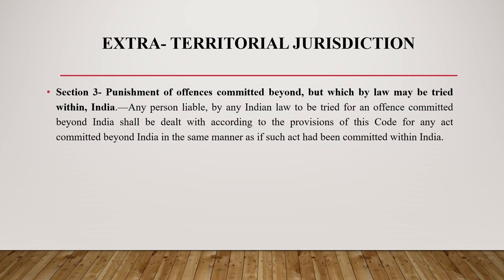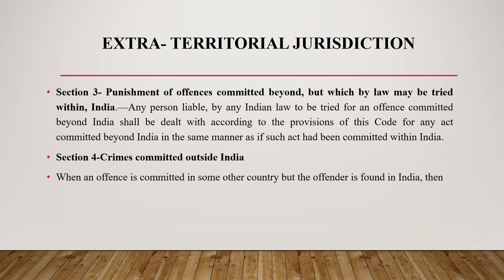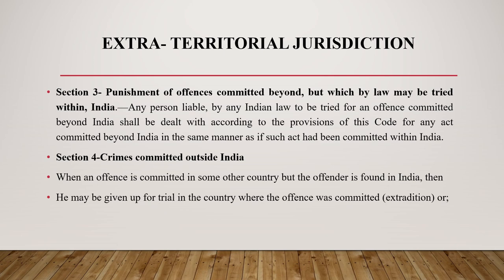Section 3 defines the punishment of offences committed beyond India but which by law may be tried within India. Any person liable under Indian law to be tried for an offence committed beyond India shall be dealt with according to the provisions of the code for any act committed beyond India in the same manner as if such act had been committed within India. Section 4 deals with crimes committed outside India: when an offence is committed in another country but the offender is found in India, he may be given up for trial in that country through extradition, or tried in India under extraterritorial jurisdiction.